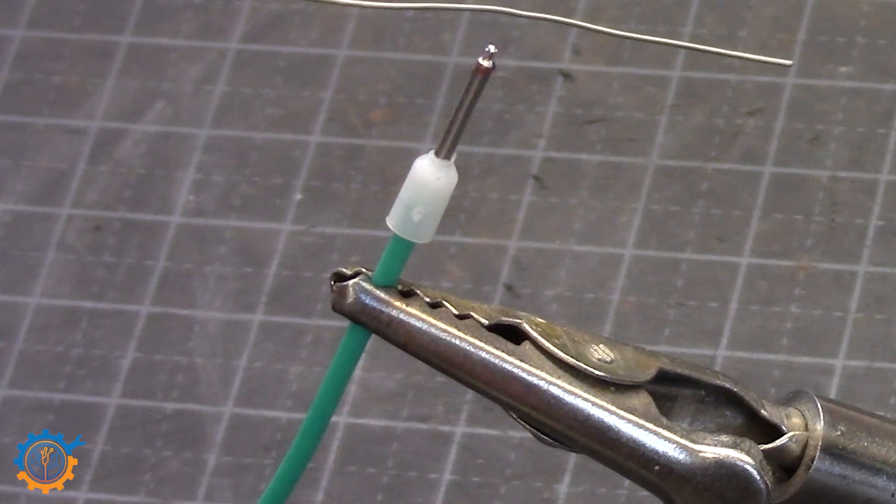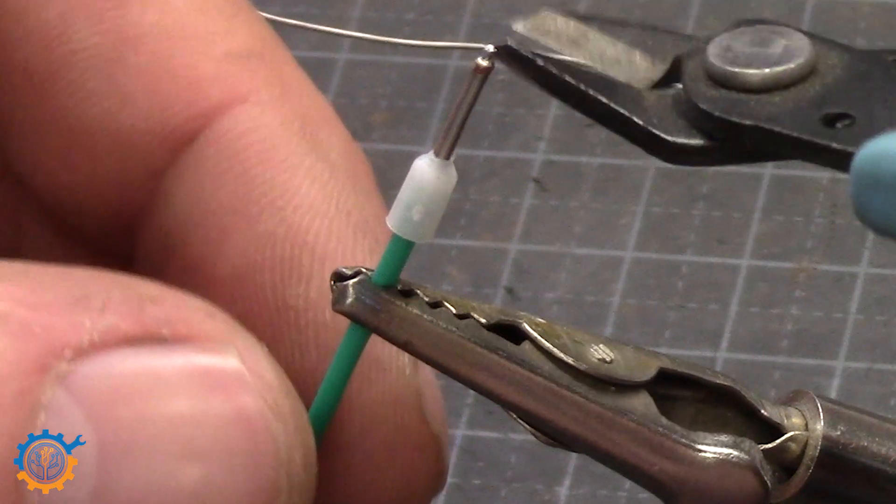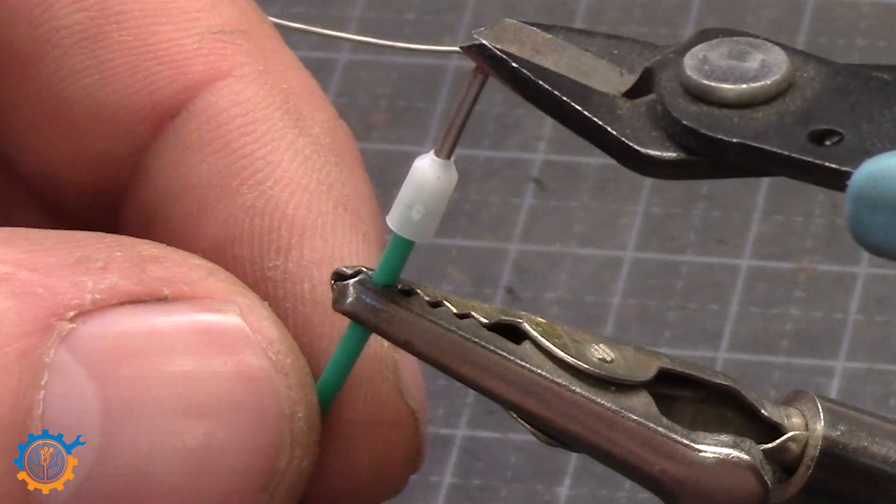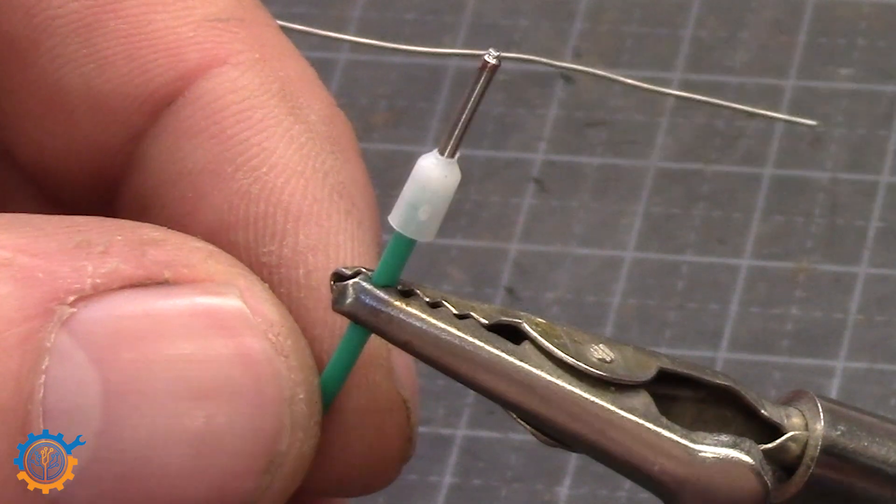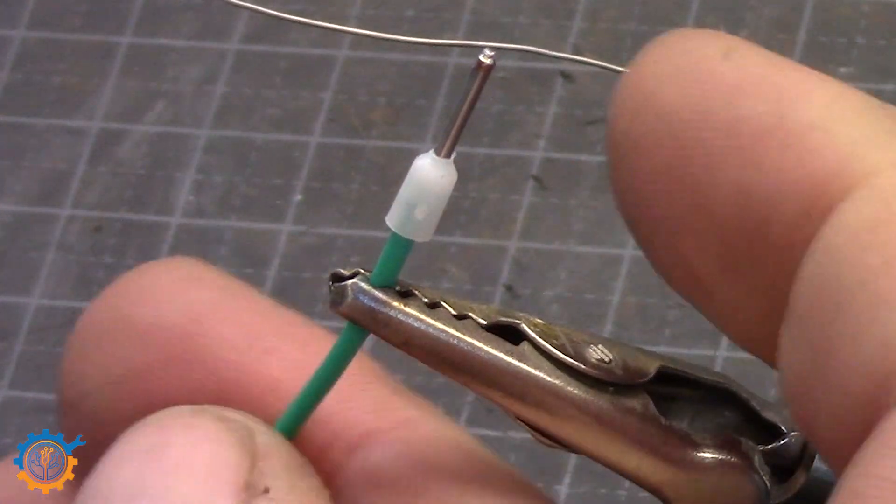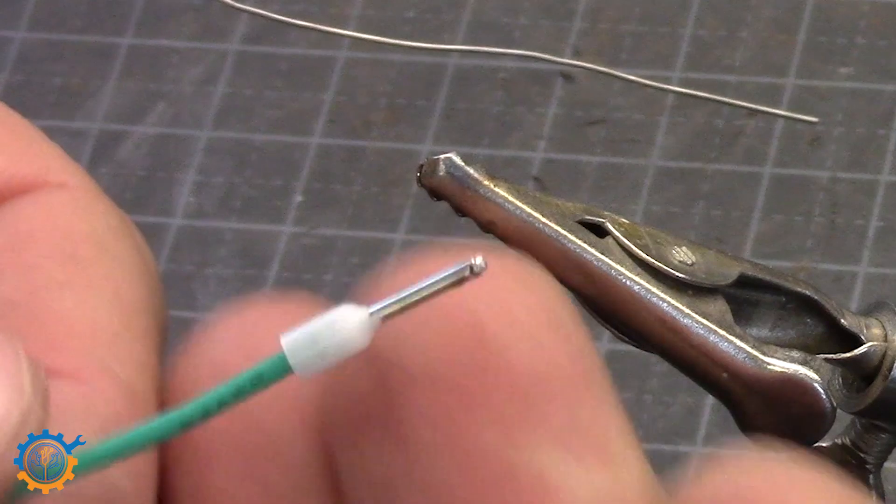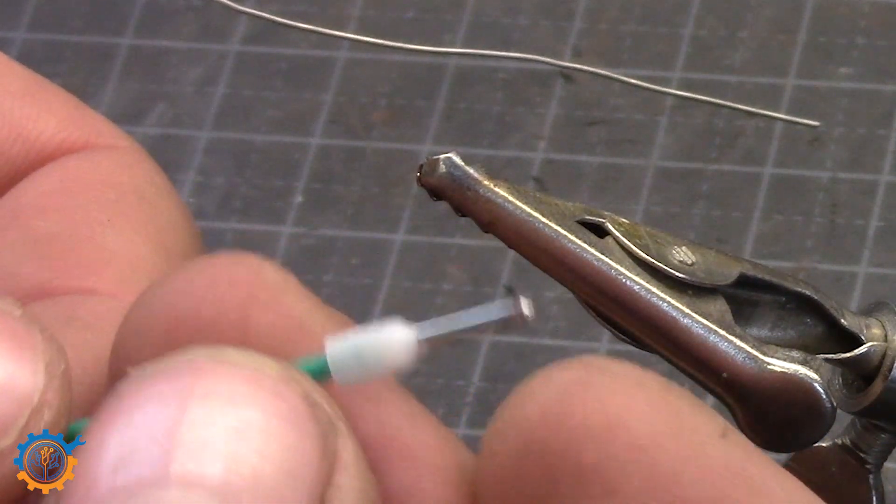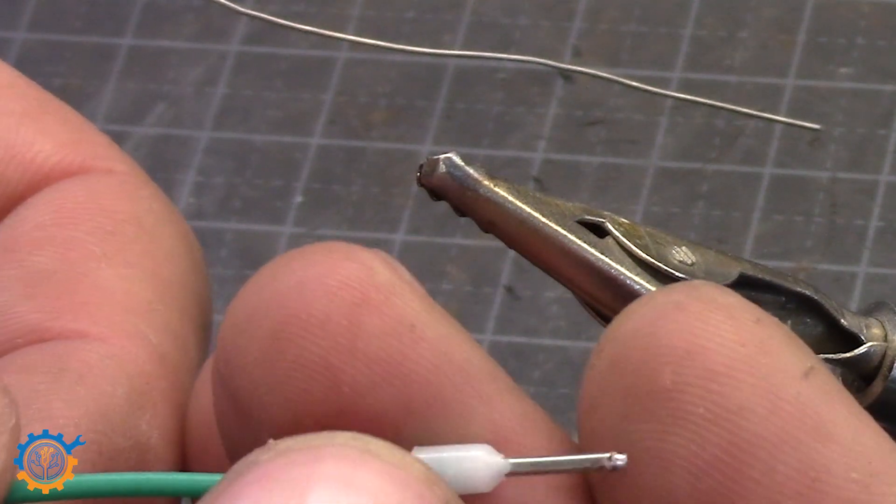And when that is done, you take your flush cut pliers and cut off the end. And you then have this perfectly nice joint that you can use. And I mean, it looks very beautiful. You get nothing that is sticking out.